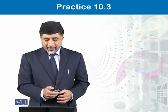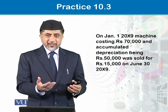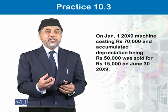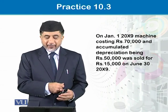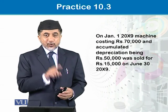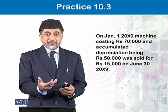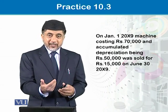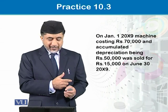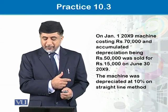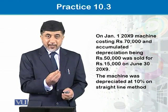Let's see the question. The cost of the asset is $70,000 and its accumulated depreciation opening balance is $50,000. This asset was sold on 30th June X9 — we used it for 6 months and then sold it for $15,000. The depreciation method used in this scenario is the straight line method.